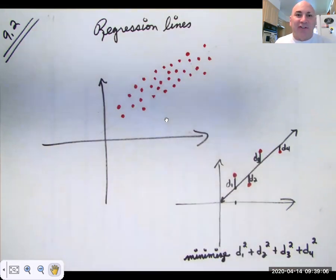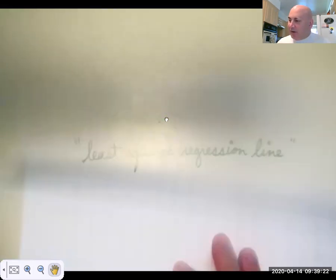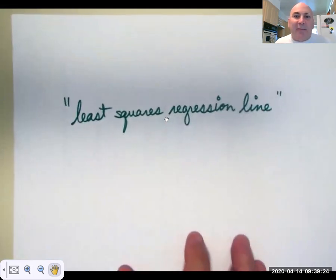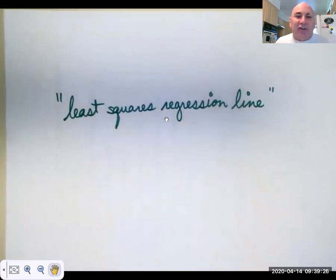I square those distances because you know in statistics we square everything and that makes it positive anyway. I want to minimize the sum of the squares of the distances from each data point to the line. That's why this regression line is called the least squares regression line.